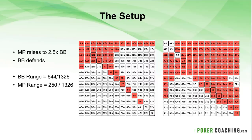Let's talk about the setup for this webinar. Middle position raises to two and a half big blinds, 100 big blind starting stacks, and the big blind calls. On the left is the middle position range — about 18% of hands. No deuces or threes, fours are included, no offsuit ten-broadways like ace-ten off, king-jack, queen-jack. King-eight suited or better, all suited aces, suited nines or better — a tight 18% range, like a low-jack or UTG+2.